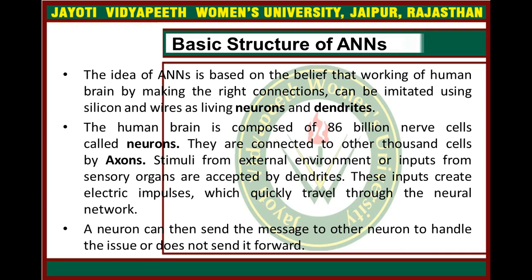The human brain is composed of basically 86 billion nerve cells, called neurons. They are connected to other thousands of cells by axons. Stimuli from the external environment or input from sensory organs are accepted by dendrites. These inputs create electronic impulses which quickly travel through the neural network. A neuron can then send the message to other neurons to handle the issue, or it does not send it forward.